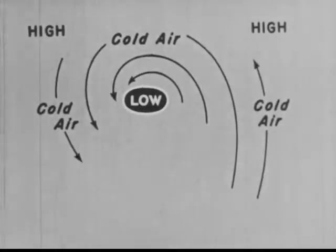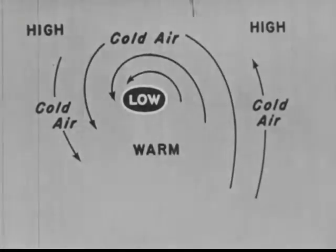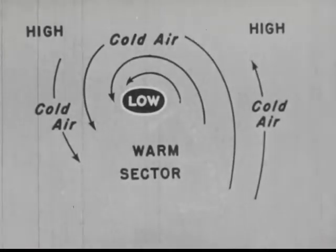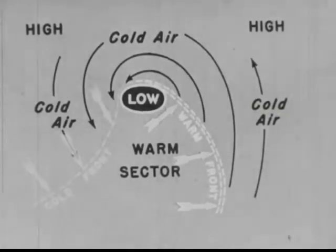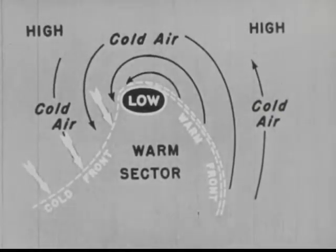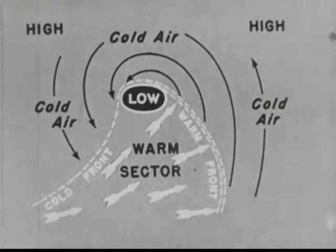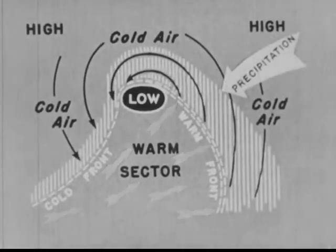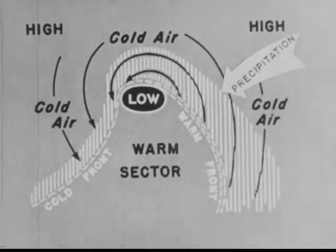We have cold air to the east, north, and northwest of the center, with a warm sector to the south. A warm front with easterly, then southerly winds. Beyond the warm sector, a cold front, where south winds shift to northerly. Where warm, moist air overrides cold air, there is precipitation — rain or snow.